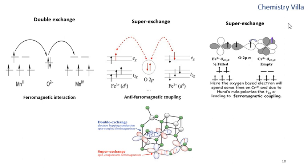We will discuss what is double exchange and super exchange. Double exchange occurs between two ions with dissimilar valences or oxidation states, which are connected through a non-magnetic atom, for example oxygen.